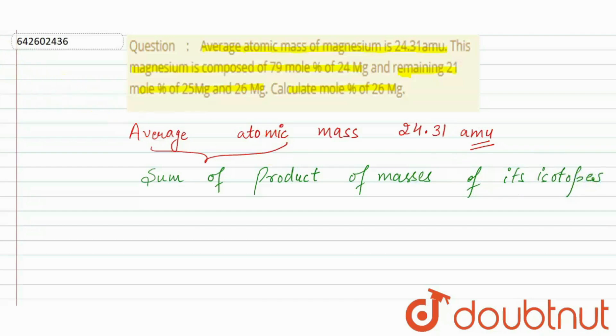So now we have the mole percentage of 24 magnesium that is 79. The mole percentage of 25 magnesium and 26 magnesium is 21. So now what we will do,